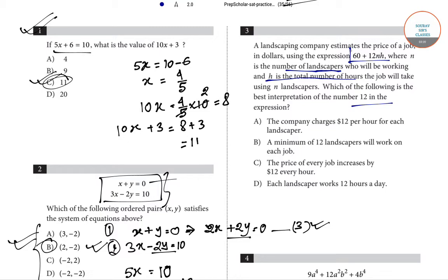In the expression 60 plus 12 × n × h, which of the four options represents the number 12? Option A says the company charges $12 per hour for each landscaper. In this expression, 60 is the fixed part of the price and 12 × n × h is the variable part, where n is the number of landscapers and h is the hours of the job.